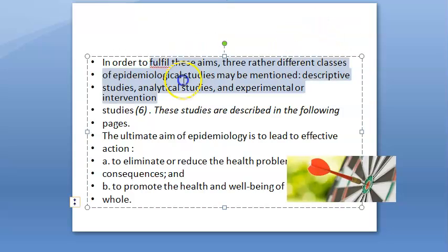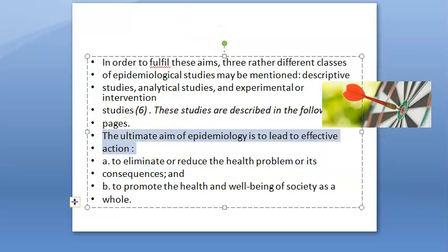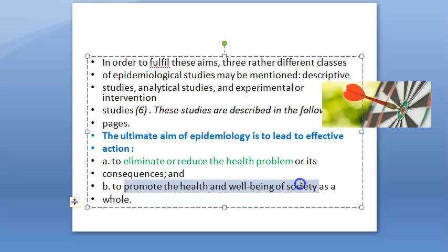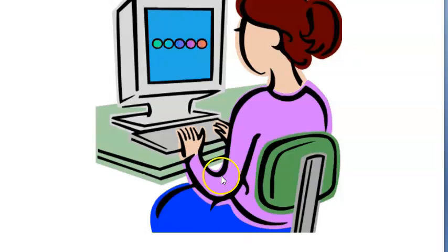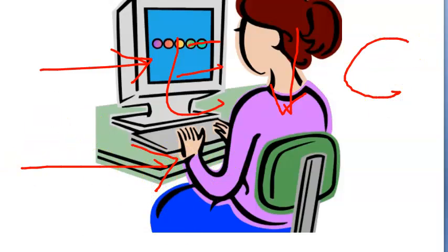To fulfill these aims, you can have descriptive studies, analytical studies, and experimental or interventional studies. The ultimate aim of epidemiology is to eliminate or reduce the health problem itself, or to reduce the health problem and its consequences.